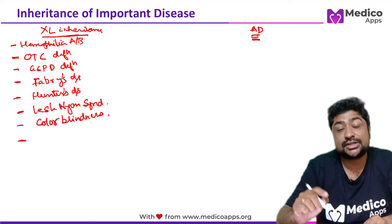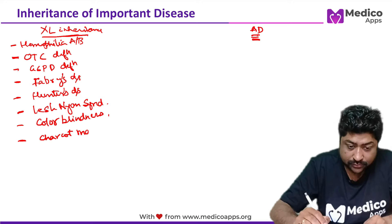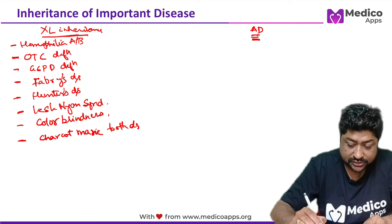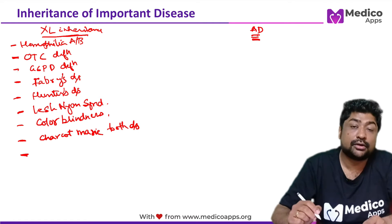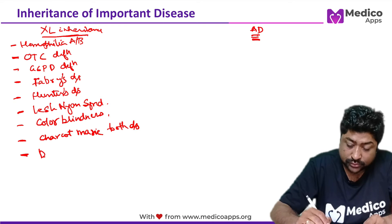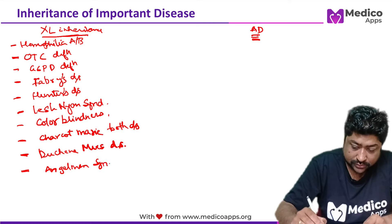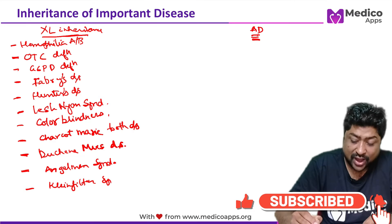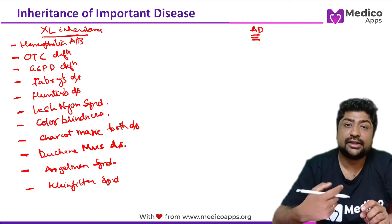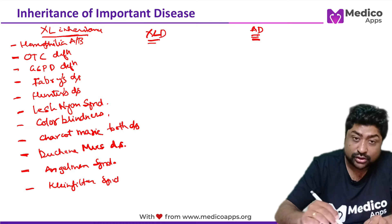Another very important condition that has both an X-linked recessive variant and an autosomal dominant variant is Charcot-Marie-Tooth disease. A very important muscular dystrophy asked multiple times is Duchenne muscular dystrophy. Also in this list: Angelman syndrome and Klinefelter's syndrome. I have not included anything which already has 'X-linked' in its name, like X-linked sideroblastic anemia, which you can easily guess. All of these listed so far are X-linked recessive.